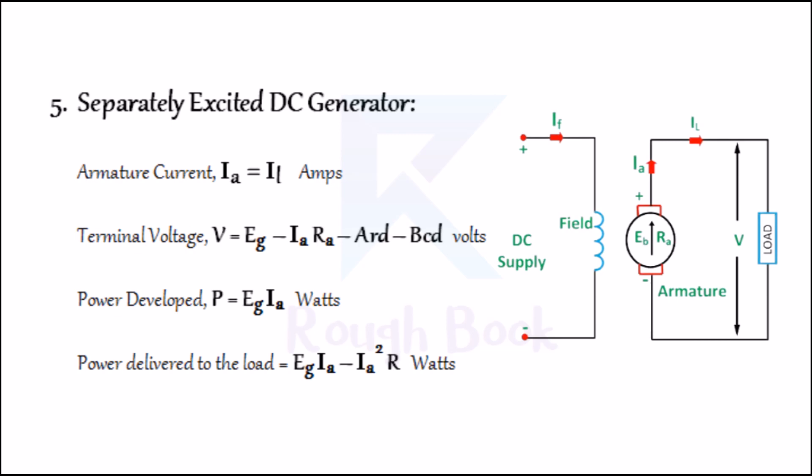Number five: Separately excited DC generator. When the field coil is excited by an independent external source of DC voltage, the generator is called a separately excited DC generator. Armature current IA = IL in amps. Terminal voltage = EG − armature resistance drop − armature reaction drop − brush contact resistance drop in volts. Power developed P = EG × IA in watts. Power delivered to the load = EG × IA − IA² × R in watts.